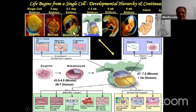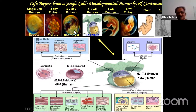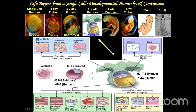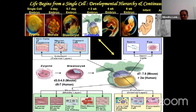Then it gives rise to all extra-embryonic parts, then it comes to the blastocyst where distinction takes place between embryonic versus extra-embryonic. The embryonic part comes from the inner cell mass (ICM), which gives rise to the embryo proper. The outermost covering, the trophectoderm or trophoblast, gives rise to all extra-embryonic parts. Then comes gastrulation, during implantation, where you are getting three germ layers.